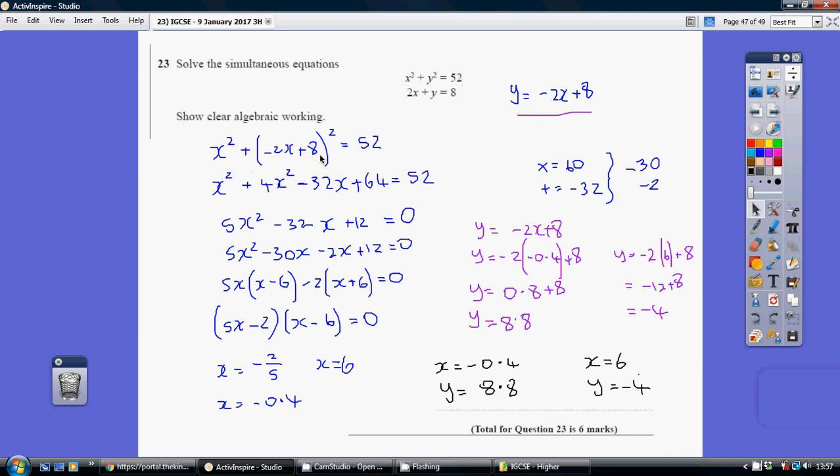I then multiply out that pair of brackets. So minus 2x plus 8 multiplied by minus 2x plus 8, and that gives me 4x squared minus 32x plus 64 together with my x squared equaling 52.